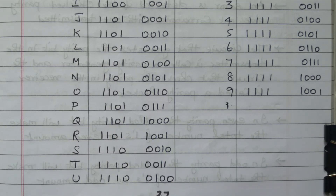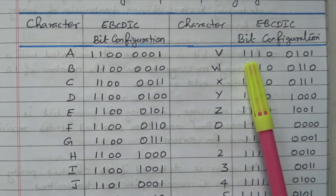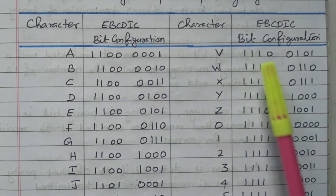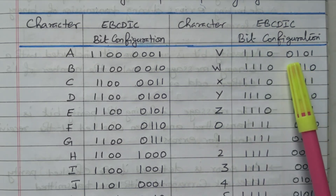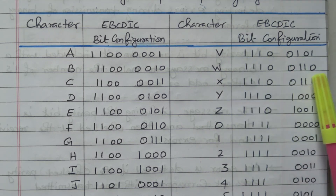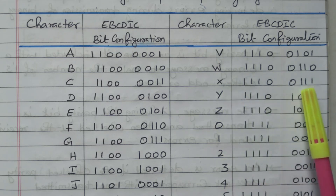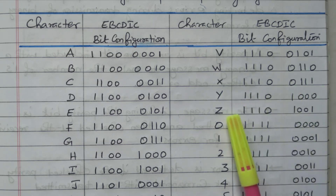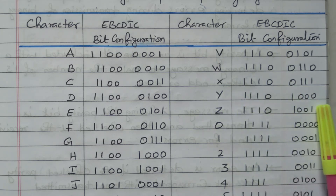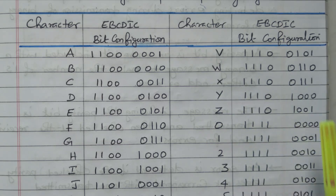For V, the MSB is 1111 0110, and the LSB changes: for W it is 0111, for X it is 0111, for Y it is 1000, for Z it is 1001. Now for the numerical values, the MSB is 1111. The LSB changes from 0 to 1 sequentially — this is the binary equivalent of 0 through 9.